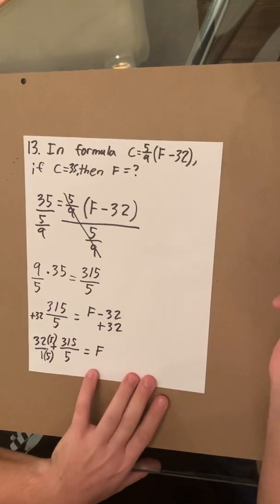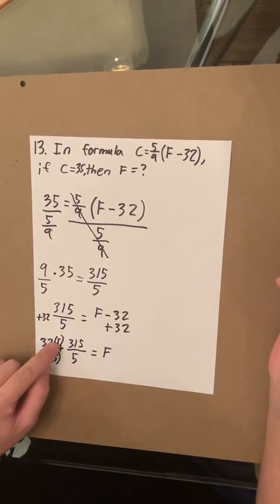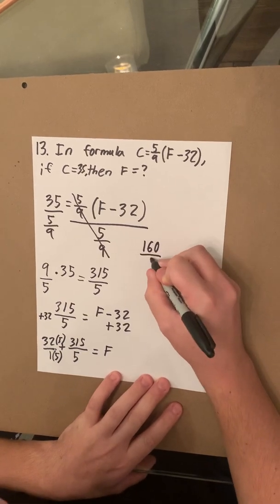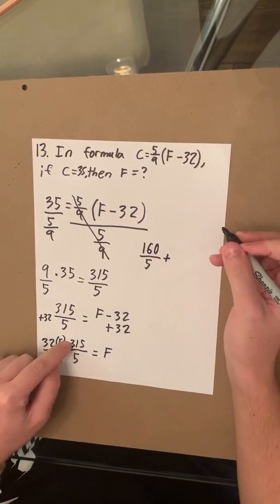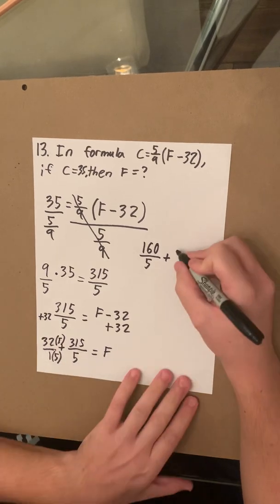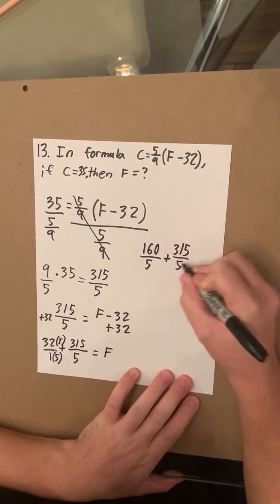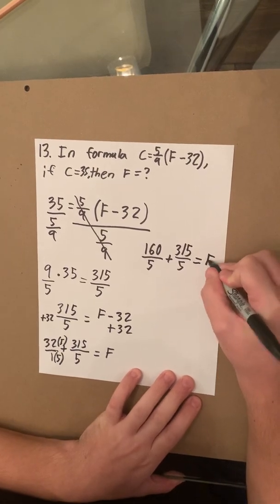And I'm going to rewrite this over here. So 32 times 5 equals 160 over 5, and then we bring over our 315 over 5 equals F.